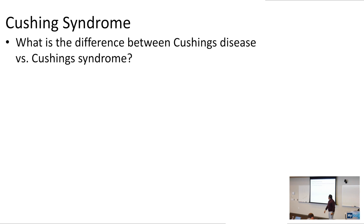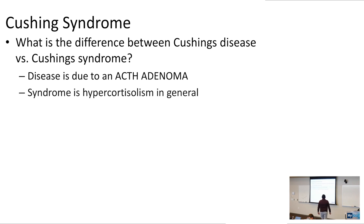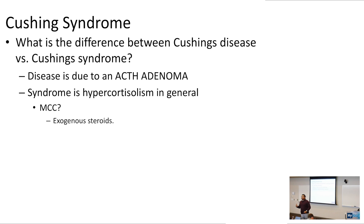Cushing syndrome — what is the difference between Cushing's disease and Cushing's syndrome? Cushing's disease is due to an ACTH-producing adenoma. The syndrome is going to be some hypercortisolism in general — if I gave you steroids for a month, you're going to have Cushing's syndrome, which is due to hypercortisolism or exogenous steroid use.